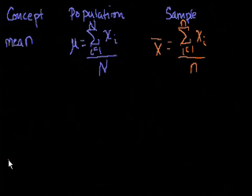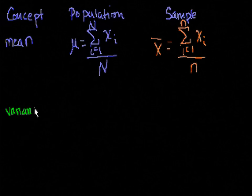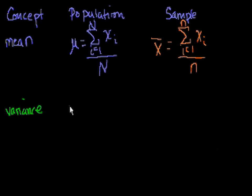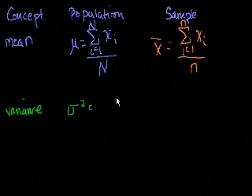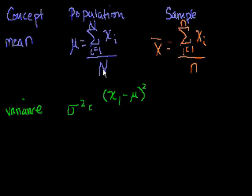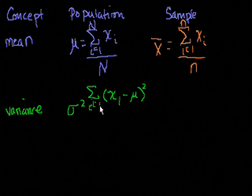The mean gives us the central tendency, but what if we wanted to know how good an indicator it is, or on average how far the data points are from the mean? That's where we get the concept of variance. For a population, the notation for variance is sigma squared, and it equals the sum of the squared differences between each data point and the mean, divided by n — the average of those squared distances.